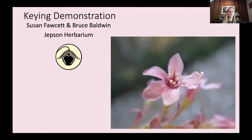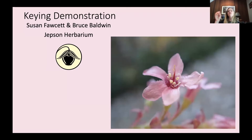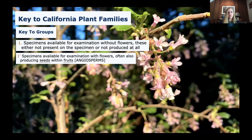With this keying demonstration, you could either follow along in the Jepson manual if you have it, follow along on the eFlora, or just sit back and enjoy the show. It's really intimidating to see all those lines of text and there's a lot of information to get through, and it can be challenging. What I'm trying to do here is break it down into the fundamental parts, which are couplets. We'll be going from the very beginning with the key to California plant families, key to groups, going one by one through each of these couplets together.